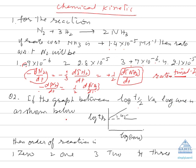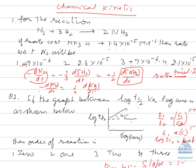If the graph between log of t½ versus log of concentration is given, use the relation t₁/t₂ = (c₁/c₂)^(1-n), where n is the order of reaction. So t½ is directly proportional to concentration raised to power (1-n). Taking log: log(t½) = k + (1-n)log(c). When plotting log(c) versus log(t½), the graph is a straight line and the slope is (1-n). If tan θ = 1 (i.e., 45°), then 1 - n = 1, so n = 0. It is a zero-order reaction.